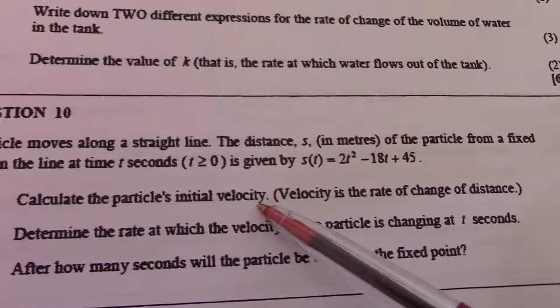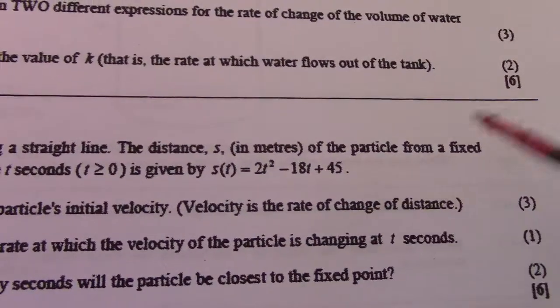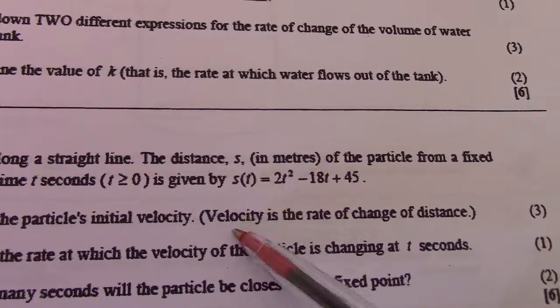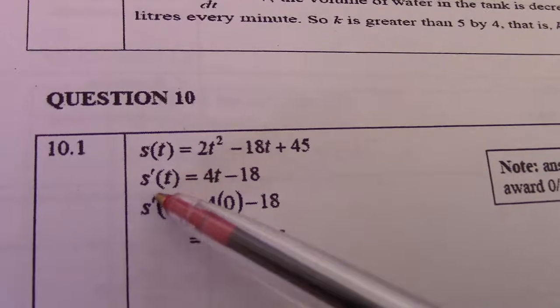Calculate the particle's initial velocity. Velocity is the rate of change of distance. So, there we have distance. To find velocity, I have to find the first derivative. So first, I would say s(t), that was given. First derivative...